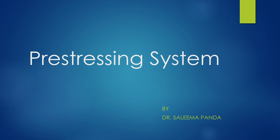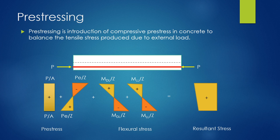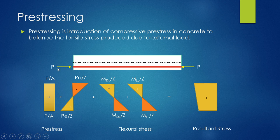Today we are going to study different prestressing systems. Prestressing is the introduction of compressive prestress force into concrete to balance the tensile stress produced due to external load. If this is a beam, the center line is drawn, and these are the cables, steel wires, or tendons. We are giving a compressive prestress force P.